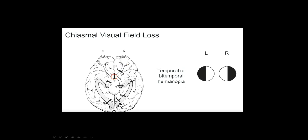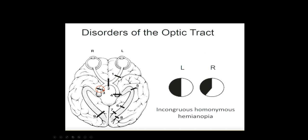At the chiasm, classically we'll have bitemporal hemianopia. Coming back to the optic tract — because the rotation of the visual fibers is taking place here — classically, a lesion of the right optic tract means the patient will have a visual field defect on the opposite side, but it's usually incongruous. So this would be a contralateral incongruous homonymous hemianopia.